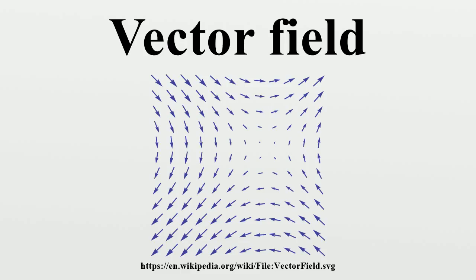Curl: The curl is an operation which takes a vector field and produces another vector field. The curl is defined only in three dimensions, but some properties of the curl can be captured in higher dimensions with the exterior derivative. In three dimensions, it is defined by curl V = ∇×V. The curl measures the density of the angular momentum of the vector flow at a point, that is, the amount to which the flow circulates around a fixed axis. This intuitive description is made precise by Stokes' theorem.